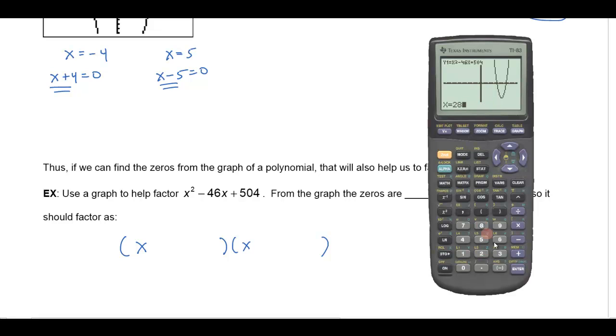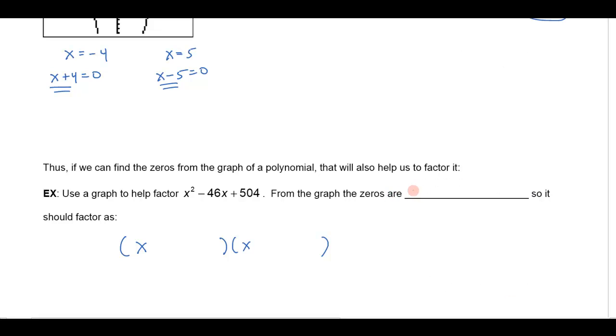I could hit 28 also. Oh, and that's also zero. So from the graph, the zeros are 18 and 28. So if I have that x = 18 is a zero and x = 28, I can bring the 18 on this side. And that tells me that x - 18 is going to be one of the zeros.